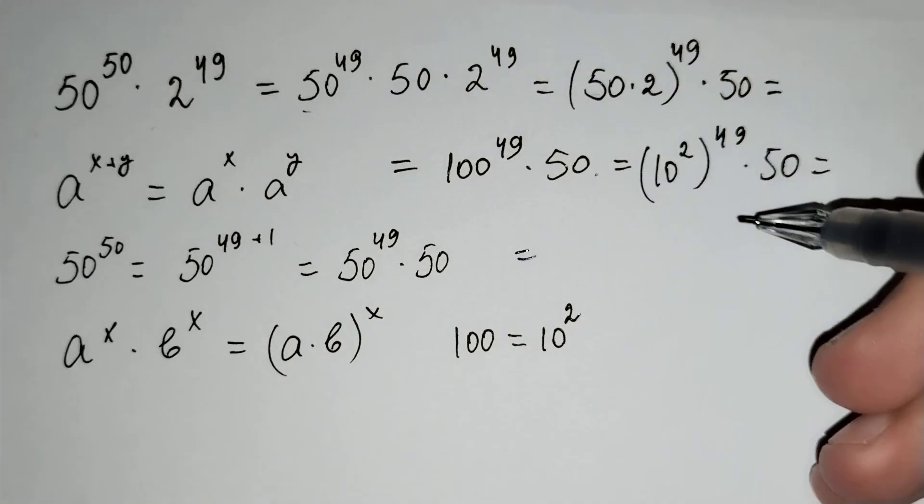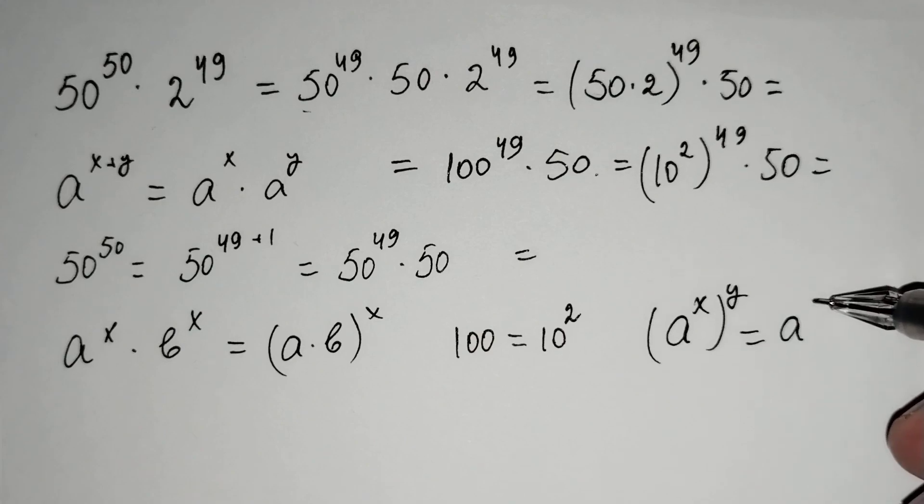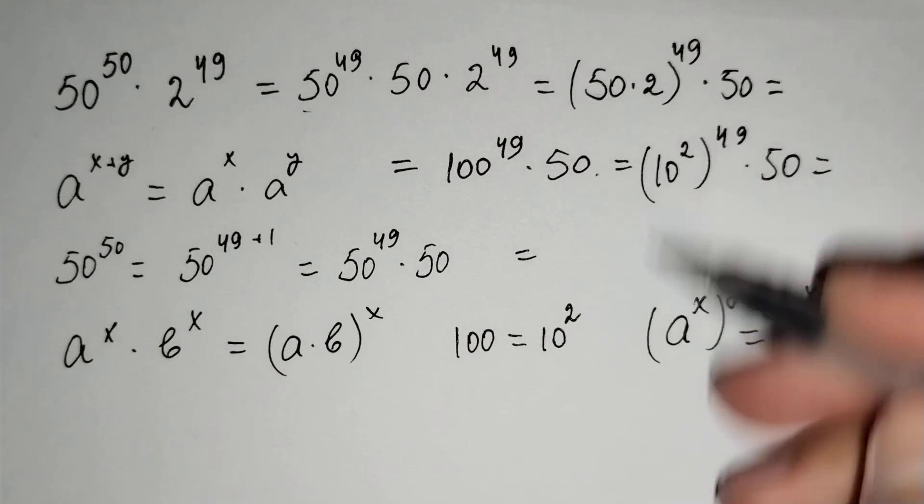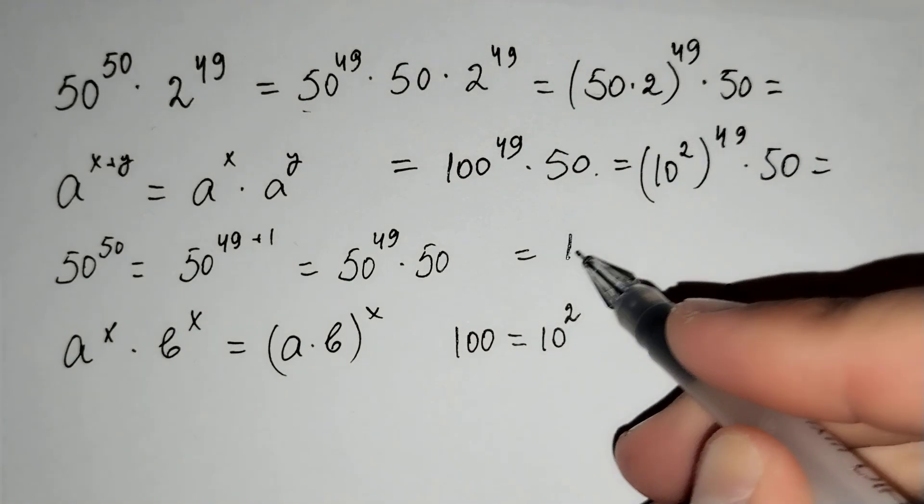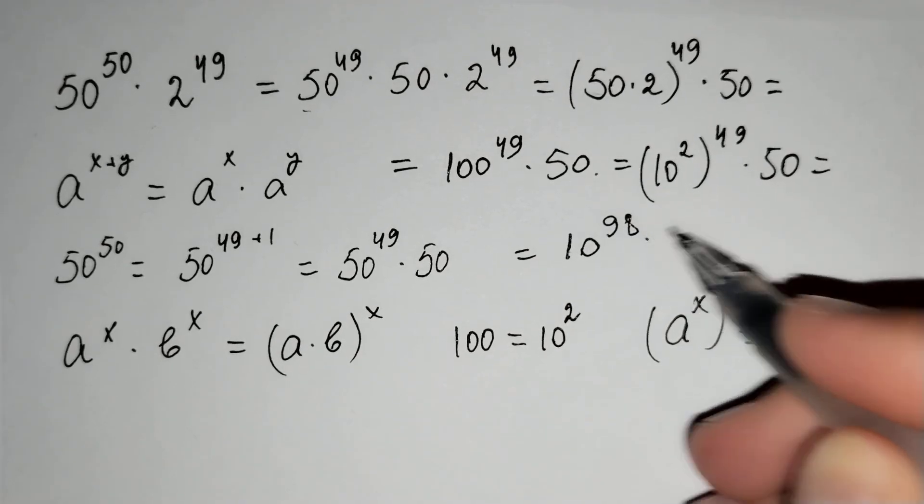This is equal to a power x power y equals a power x times y. For this formula, this is equal to 10 power 98 times 50.